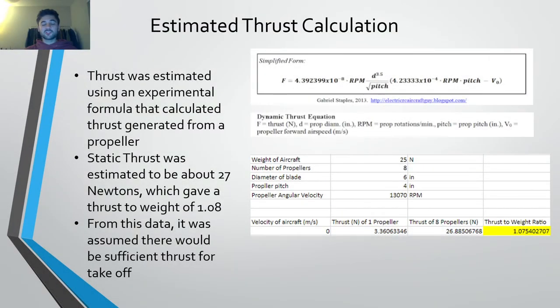In order to estimate the thrust of the aircraft, we used an experimental formula seen here on the right. The variables we used was a weight of an aircraft of 25 newtons, eight propellers, a propeller diameter of six inches with a pitch of four inches, and an angular velocity of 13,000 RPMs. Plugging those numbers back into the formula, we got a static thrust of about 27 newtons, which gave us a 1.08 thrust to weight ratio. From this data, it was assumed there would be sufficient thrust for takeoff.